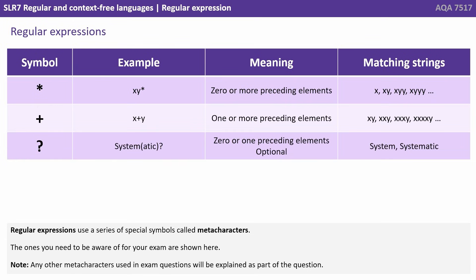The question mark means zero or one of the preceding element — it is optional. For example, system(atic)? will accept either 'system' or 'systematic'.